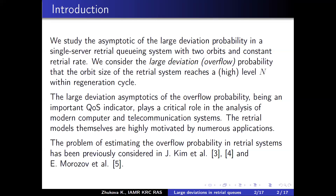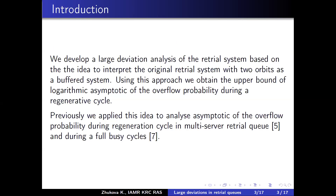This problem of estimating and calculating the overflow probability, and mostly the asymptotic of this probability, has been studied before. There are well-known results for classic systems, tandem queues, and retrial systems. The results I'm presenting today are an extension of our previous research on estimating the asymptotic of overflow probability in retrial queues, where we developed large deviation analysis for multi-server retrial queues and constructed upper and lower bounds.